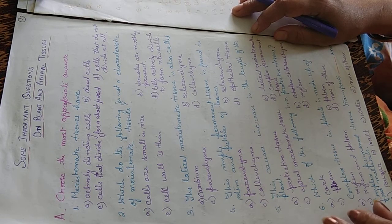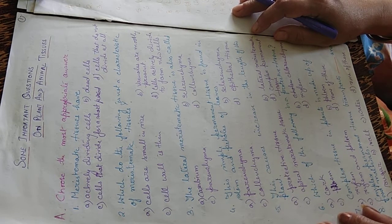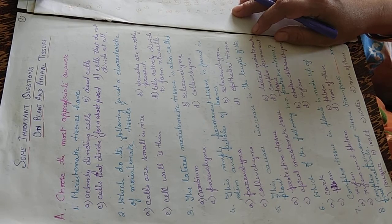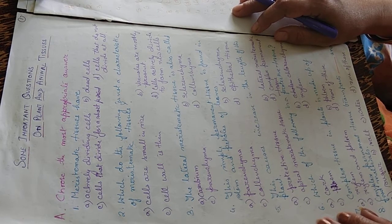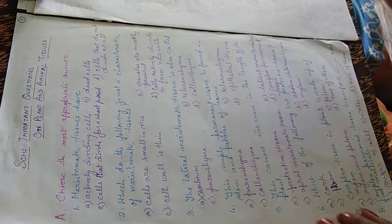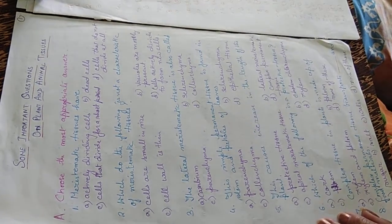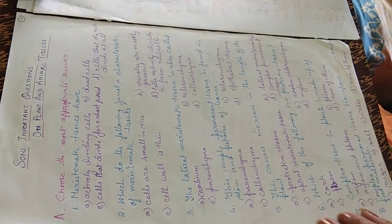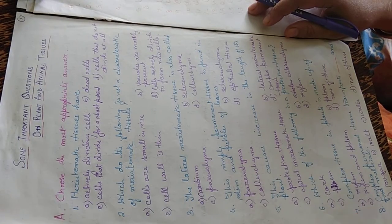The lateral meristematic tissue is also called cambium, sclerenchyma, parenchyma, or colenchyma. The answer is A — cambium. It is responsible for the increase in thickness of the roots and the stem.